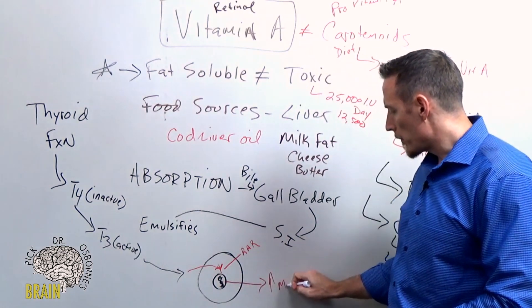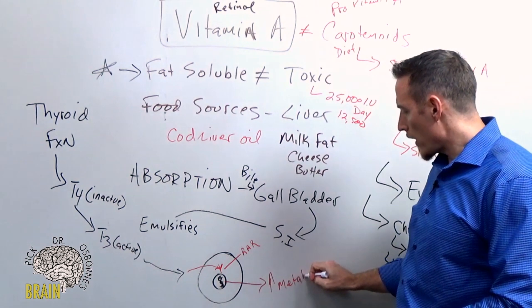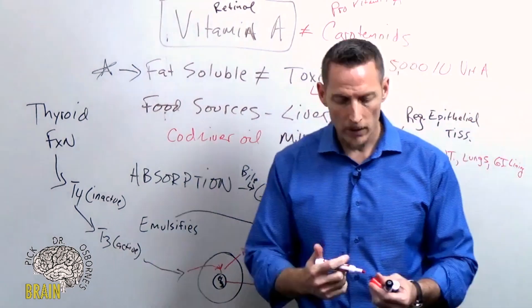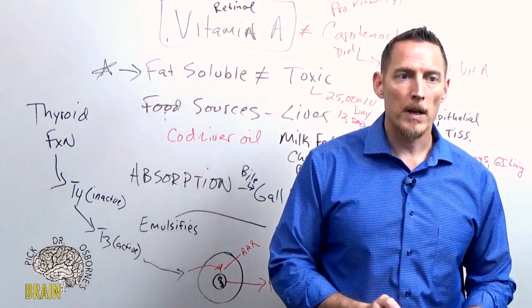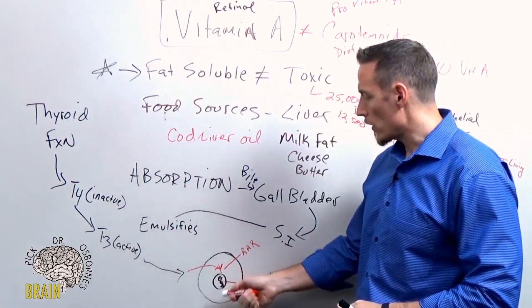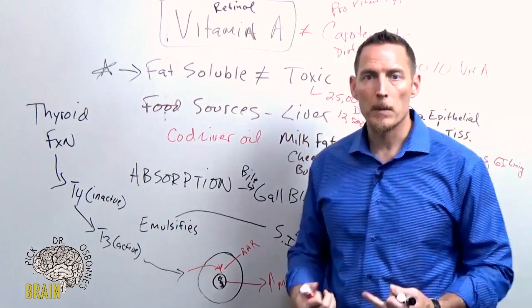Without vitamin A—remember, vitamin A forms that receptor—retinoic acid is a form of vitamin A in the body, and it forms that nuclear receptor on the nuclear membrane of the cell so that you can activate the genes to turn up the metabolism.